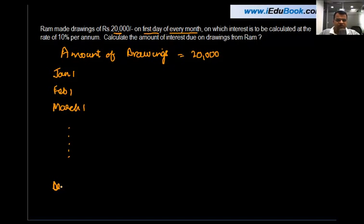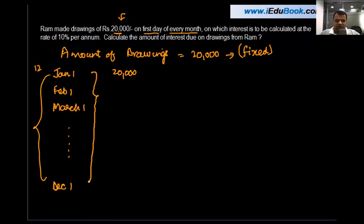There were 12 drawings in all which were made. Each drawing was Rs. 20,000, so the amount of drawings are fixed and made on the first day of every month on which interest is to be calculated at the rate of 10% per annum.